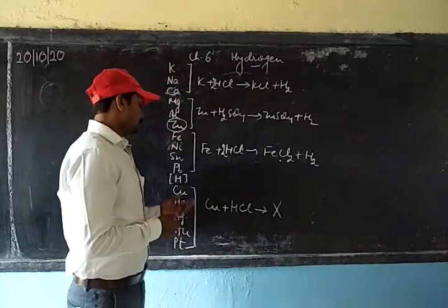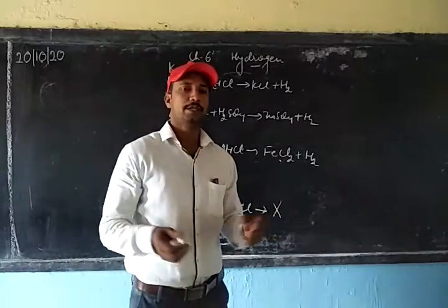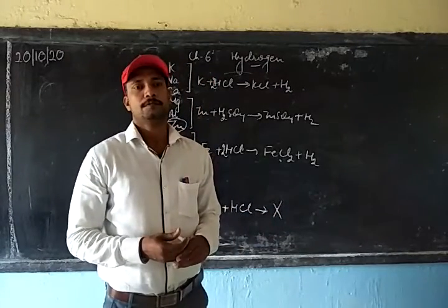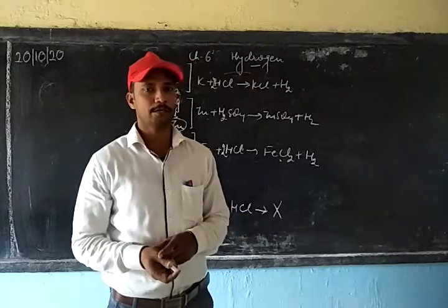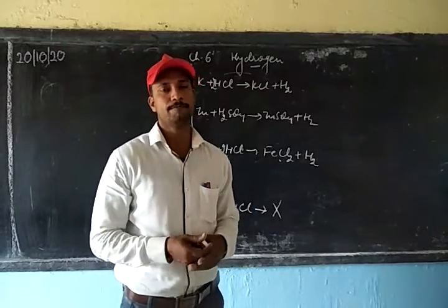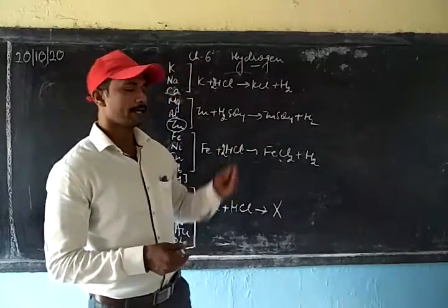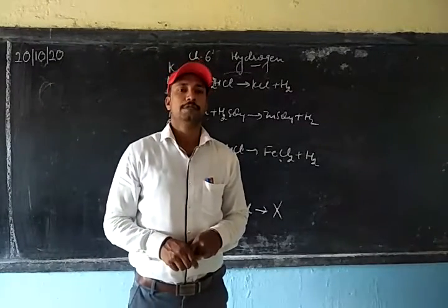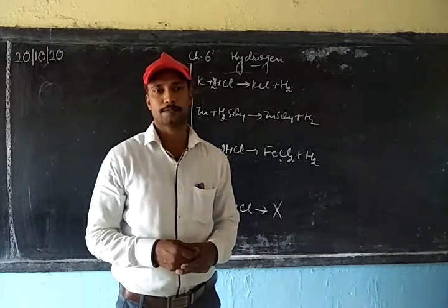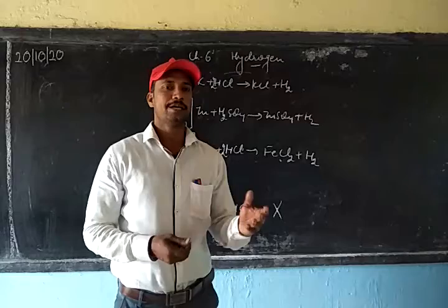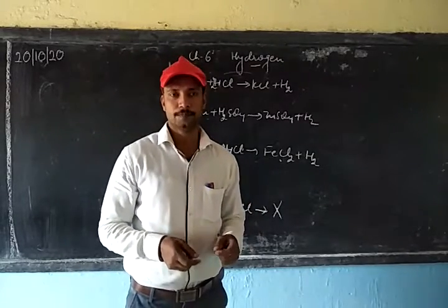Copper, mercury, silver, gold, and platinum are very less reactive metals, so they cannot displace hydrogen from the acid and no reaction takes place. This is the reactivity of these metals towards acid to produce hydrogen gas. Next time we will see how to prepare hydrogen gas in the lab. Thank you.